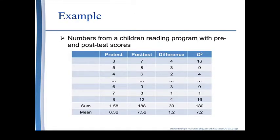Here is the basic layout when we calculate pre-test and post-test scores, and what we mean by the differences between the groups and the different squares. Here we have a pre-test score and a post-test score — the difference is four. So we subtract three from seven, or seven from three, and we get four. That is our difference.